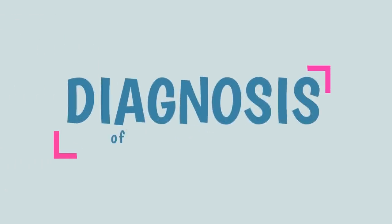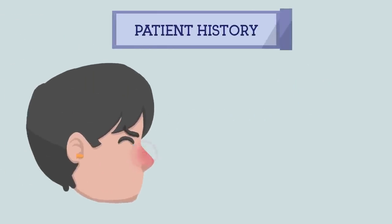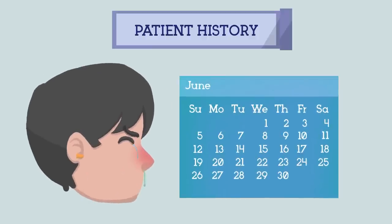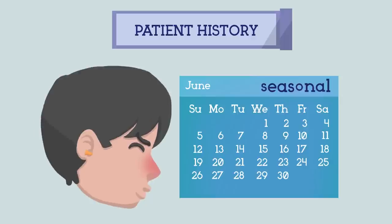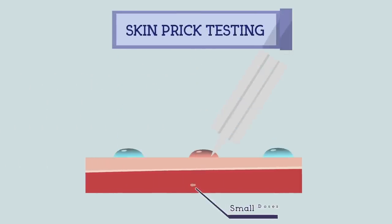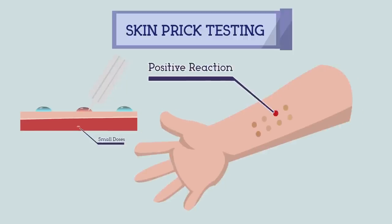For diagnosis of allergic rhinitis: 1. Patient history — the person complains of all symptoms mentioned above, and if the timing is specific and seasonal, we can easily reach a diagnosis of seasonal allergic rhinitis. 2. Skin prick testing — an allergen is introduced using a skin prick and the body's reaction is observed to confirm allergy to a particular allergen.